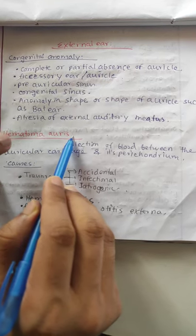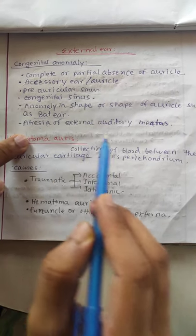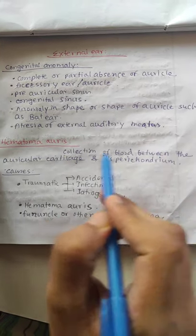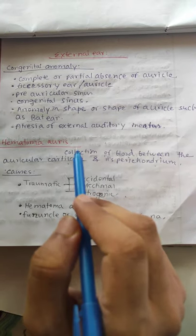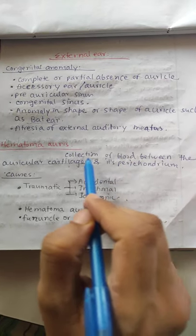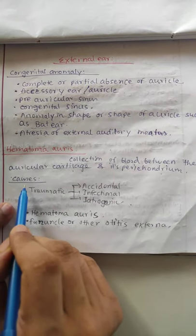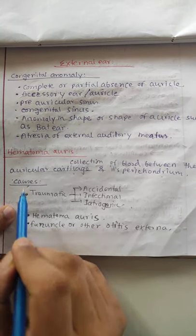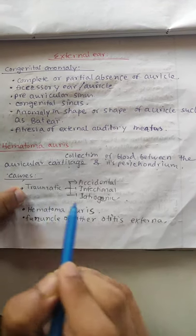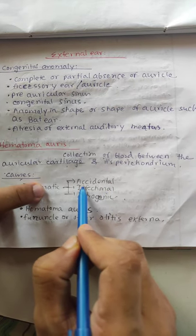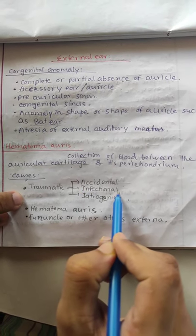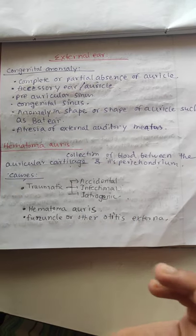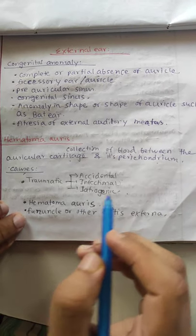Another condition is Hematoma Auris. It is the collection of blood between the auricular cartilage and its perichondrium. The most common cause is trauma — accidental trauma, iatrogenic trauma, or trauma without a unique cause.